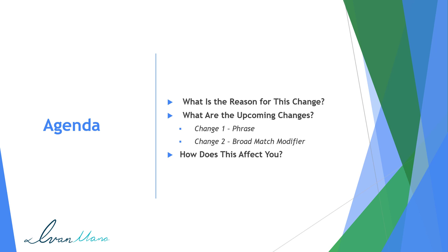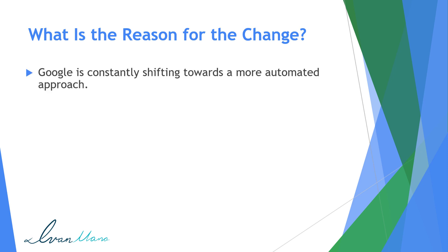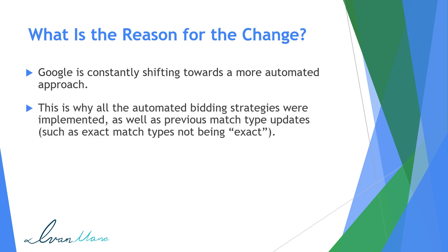First of all, what is the reason for the change? What's going on? Well, Google is constantly shifting towards a more automated approach. Ideally, the goal of Google is for customers to come by and say, hello Google, I would like to purchase three customers, please. And Google goes ahead and gets you those customers right away, no questions asked. You pay them five bucks and they get you customers worth ten bucks. That's obviously the ultimate goal — that's Utopia, something they're working on. This is why they introduced all these automated bidding strategies.